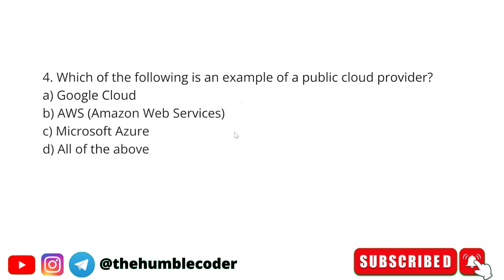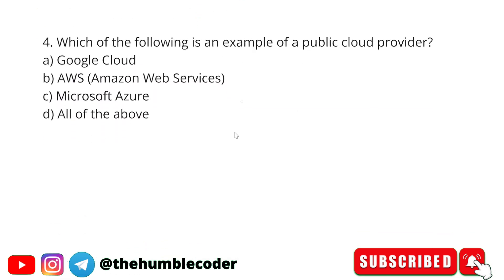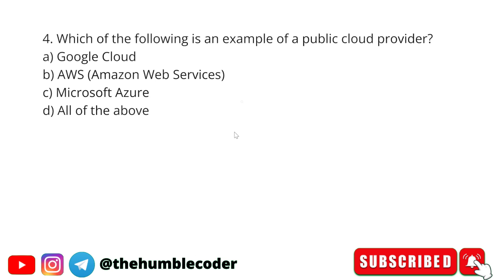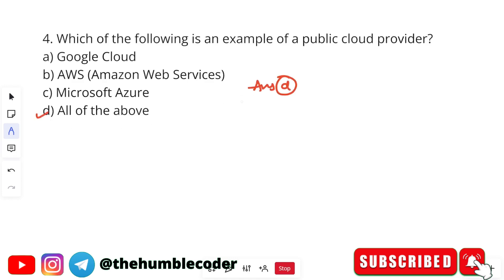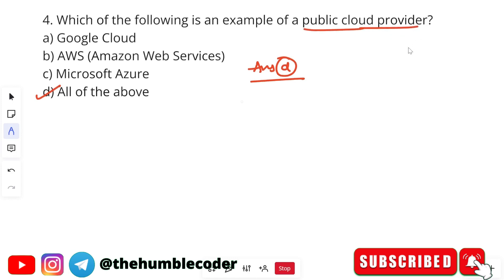Which of the following is an example of a public cloud provider? The options are Google Cloud, AWS (Amazon Web Services), Microsoft Azure, and all of the above. The correct answer is option D — all of the above. Google Cloud, AWS, and Microsoft Azure are all public cloud providers.